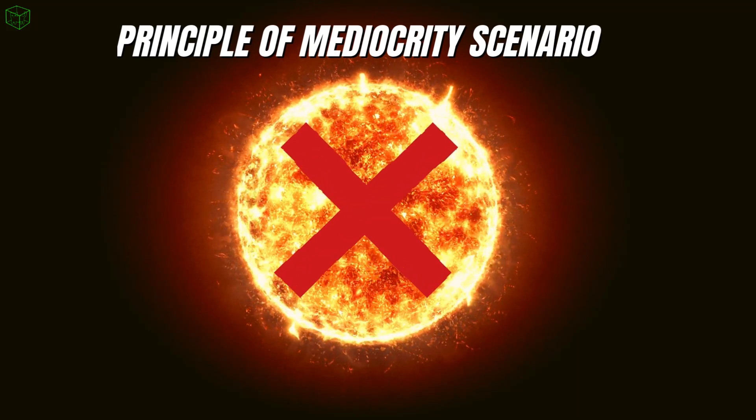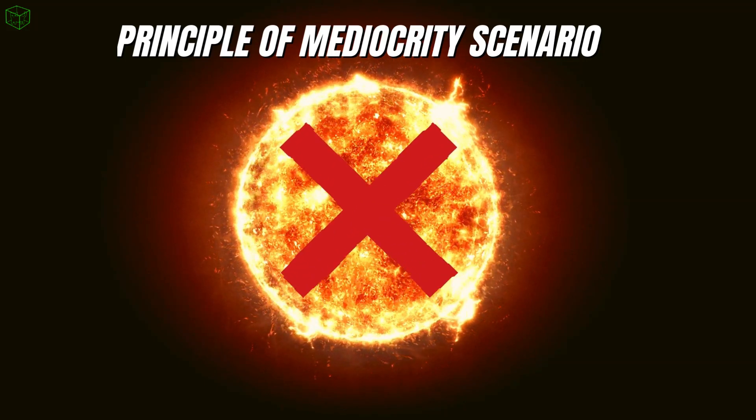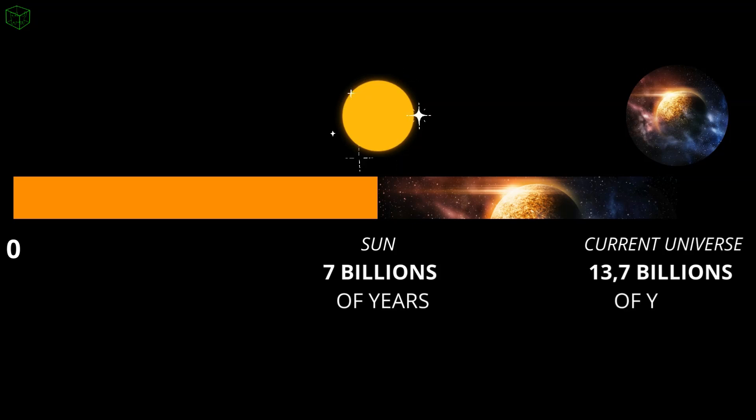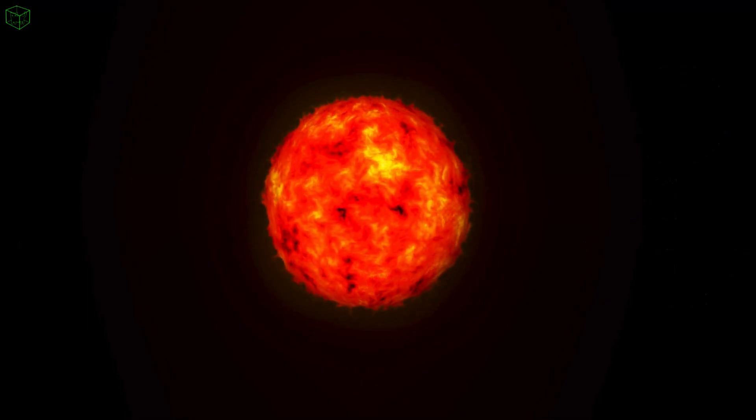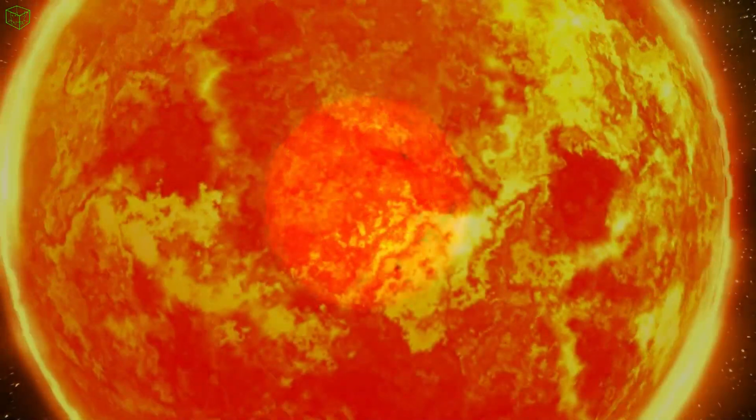What sets it apart from the other two scenarios is that it doesn't assume that sun-like stars are the most ideal type for life. This perspective makes sense, considering that the sun and similar stars will only be able to support life for about six or seven billion years, which is practically half the current age of the universe. There are stars, like orange and red dwarfs, that will last much, much longer than the sun.